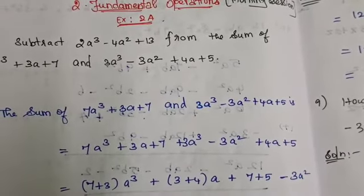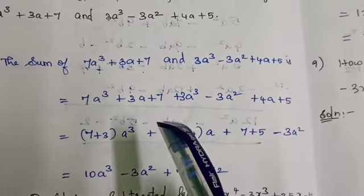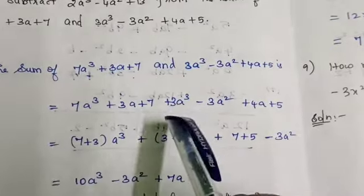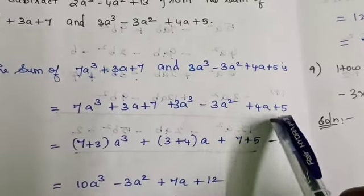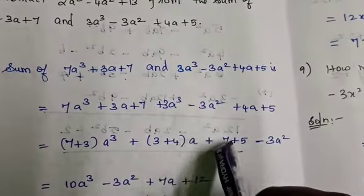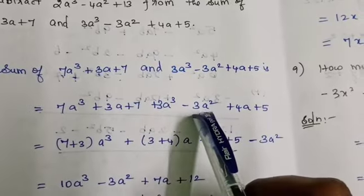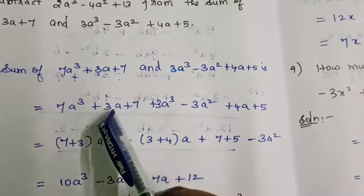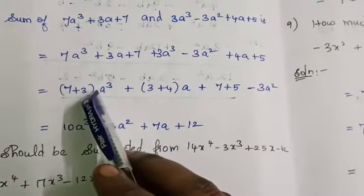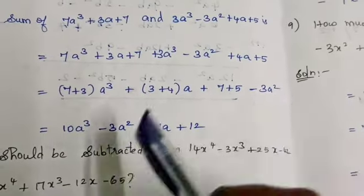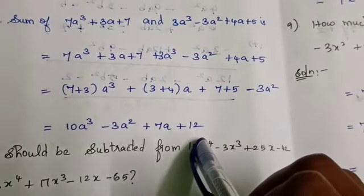For addition, there are no sign changes — take the plus sign directly. Now add the like terms only. a³ and a³: coefficients are added, giving 7 plus 3a³. Then 3a and 4a gives 3 plus 4a. Constant terms: 7 plus 5. There is also a² term but no a² in the first expression, so we take only minus 3a². The sum is 10a³ minus 3a² plus 7a plus 12.